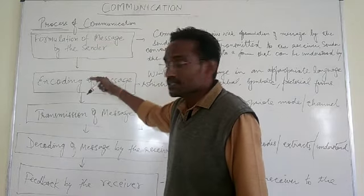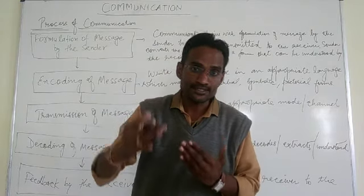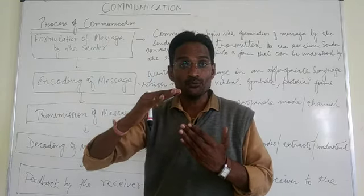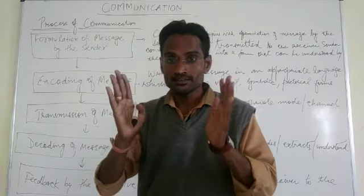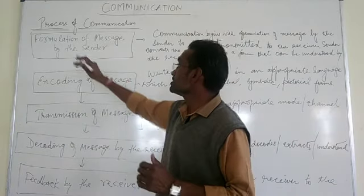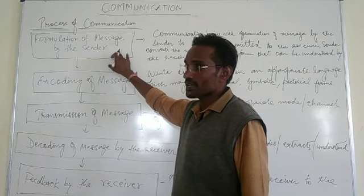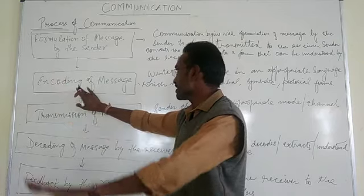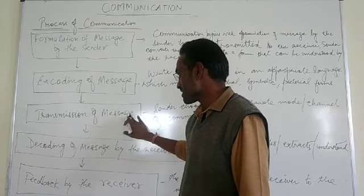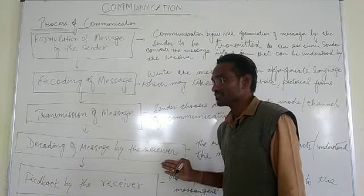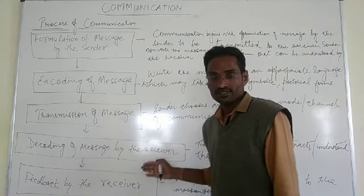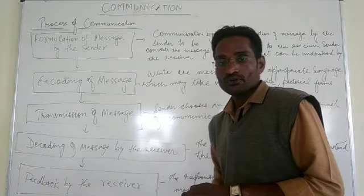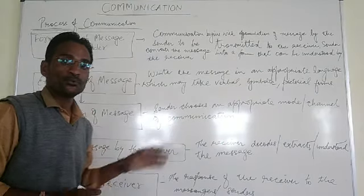Process of communication. What is the process of communication? These are the various stages — or you may say steps — involved in successful communication. The very first stage or step is the formulation of message by the sender. Second, encoding of message. Third, transmission of message. Next, decoding of message by the receiver. And lastly, feedback by the receiver. We are going to talk about all these stages one by one.